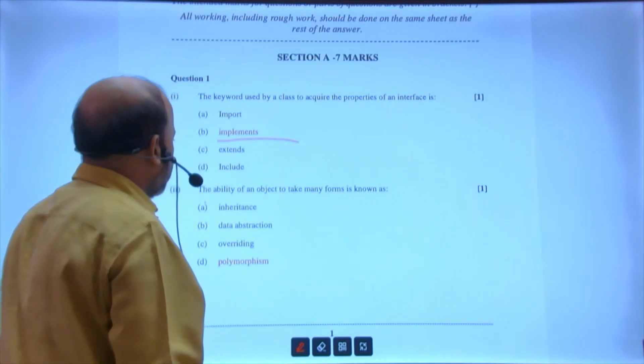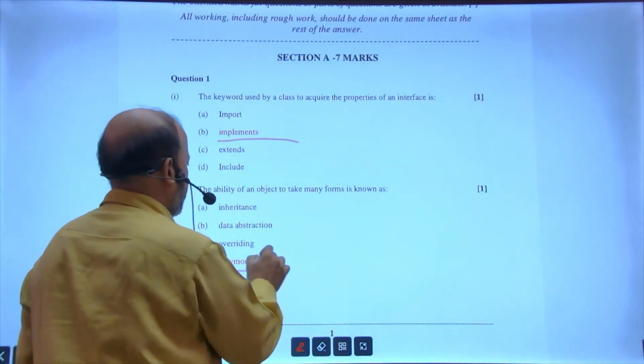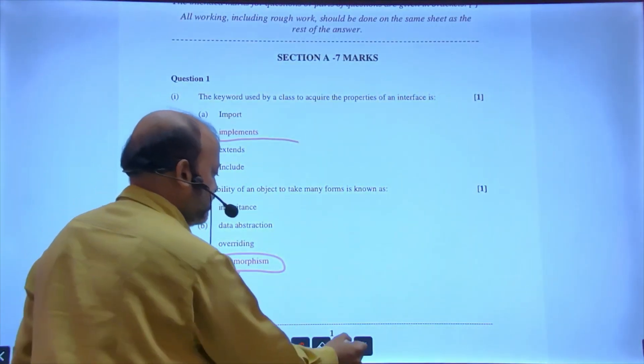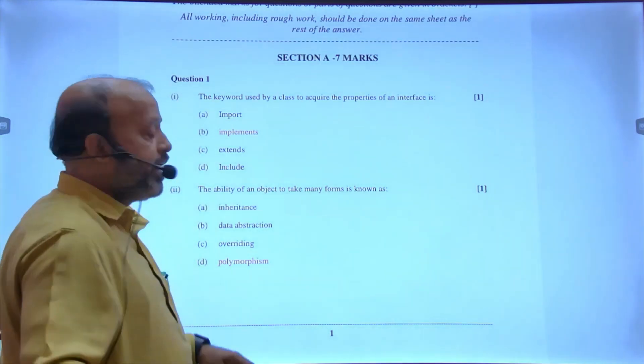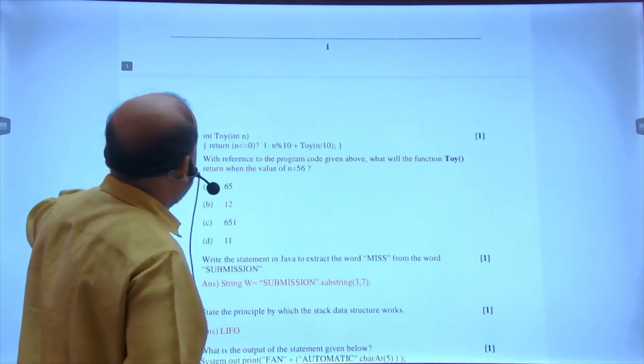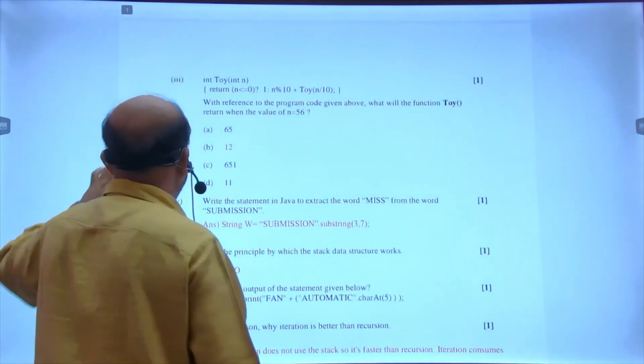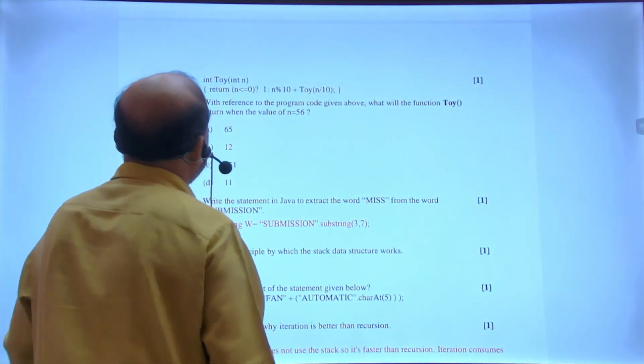The ability of an object to take many forms is known as polymorphism. In ICSE you have done this, but now you're lucky, you're getting such easy questions. This one is interesting: output based using recursion in toy(n).